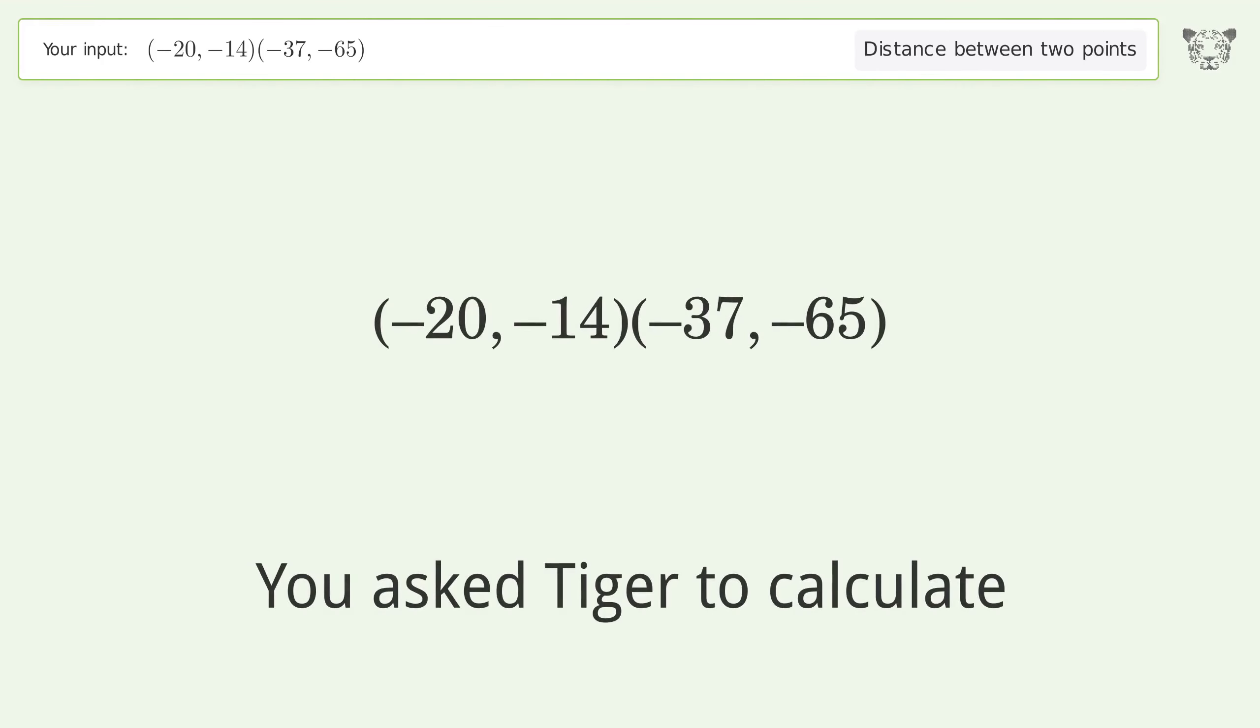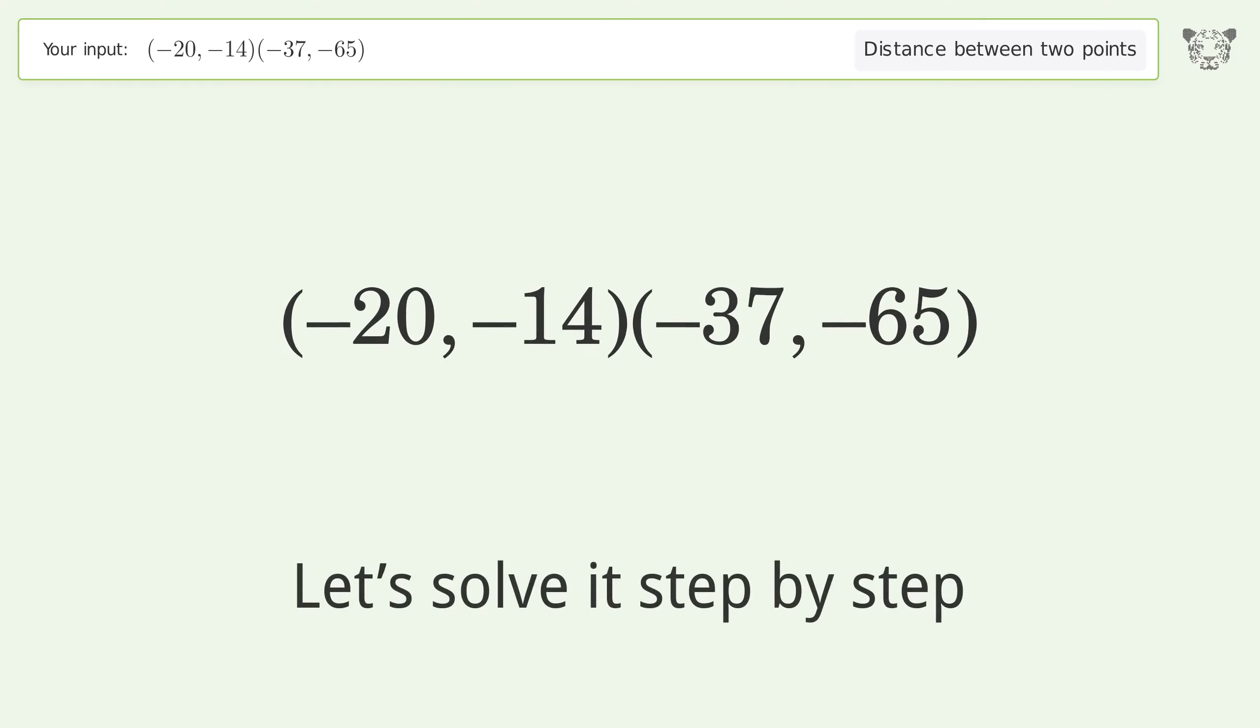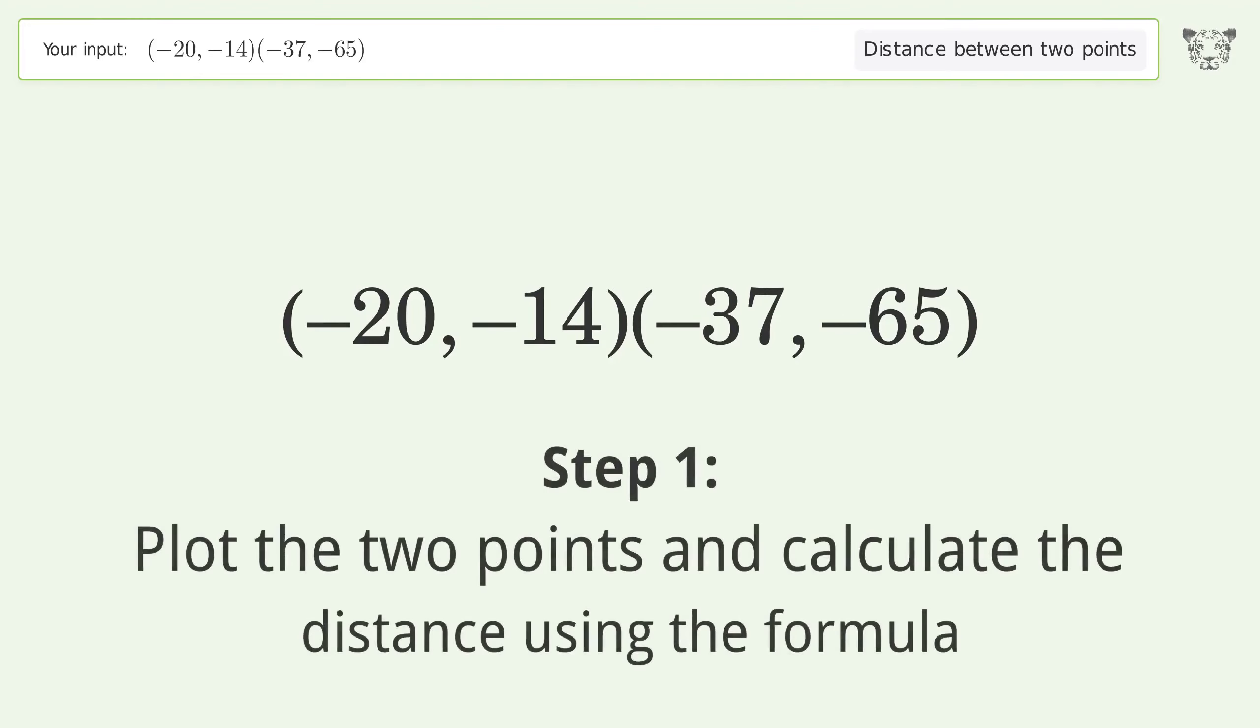You asked Tiger to calculate the distance between two points. The distance between the two points is the square root of 2890 or 53.759. Let's solve it step by step. Plot the two points and calculate the distance using the formula.